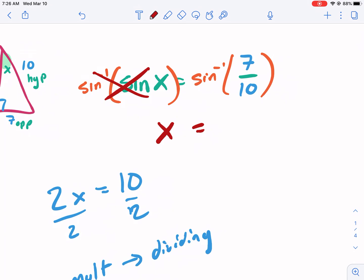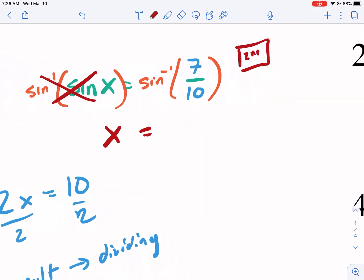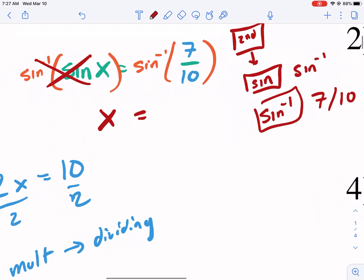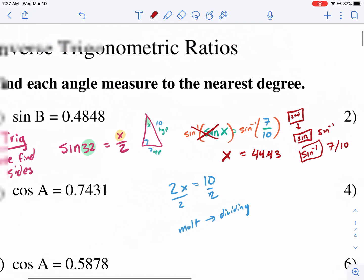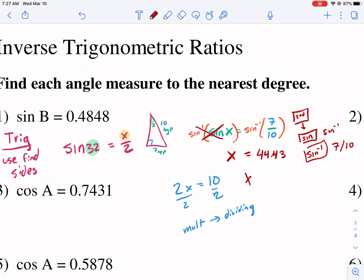If I had 2X equals 10, I would divide by 2 on both sides. Why would I divide by 2? If I'm multiplying by 2, I undo multiplying by dividing. Dividing is the opposite of multiplying. So what's the opposite of sine? How do I undo the sine? By taking the inverse sine. I need to take the inverse sine of both sides. The inverse sine is the opposite of sine and it undoes the sine of X. X equals inverse sine of 7 over 10.